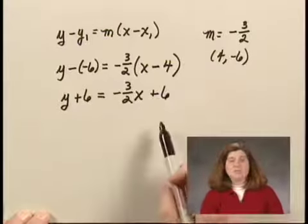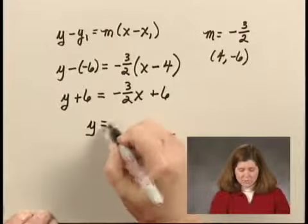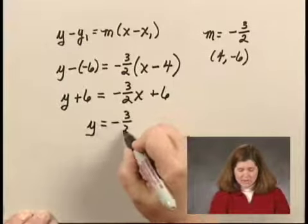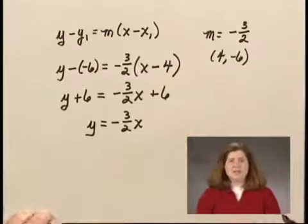If we subtract 6 from both sides, we have y equals -3/2 x as an equation of the line.